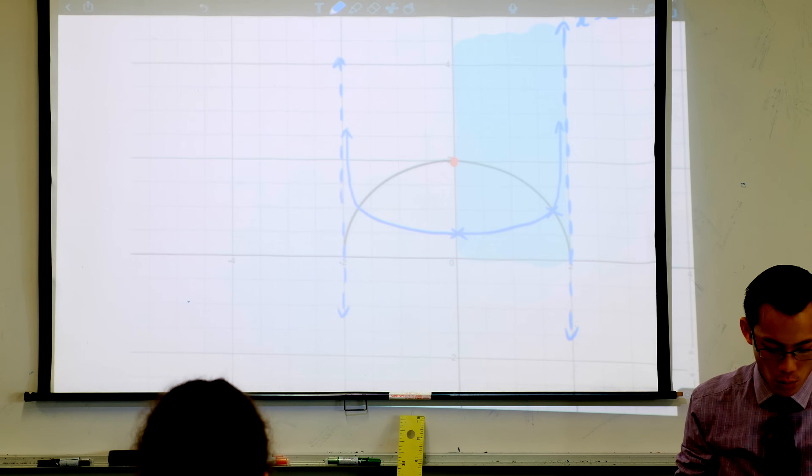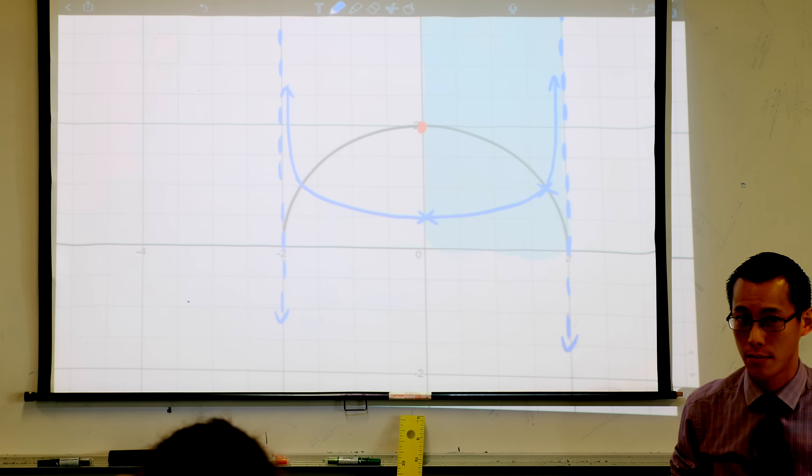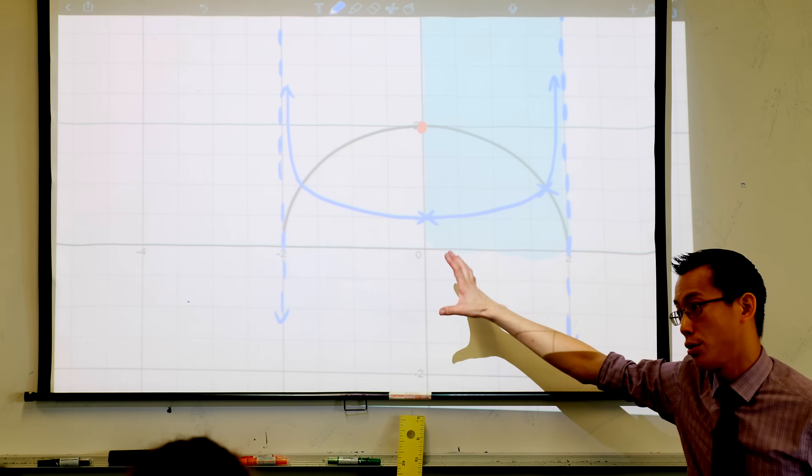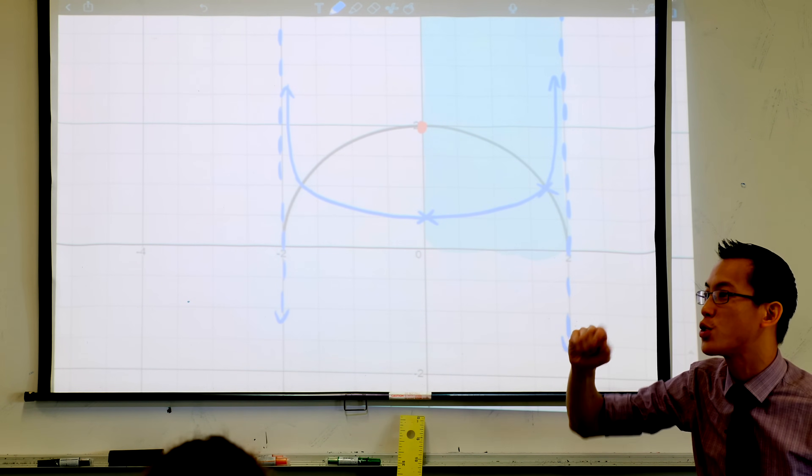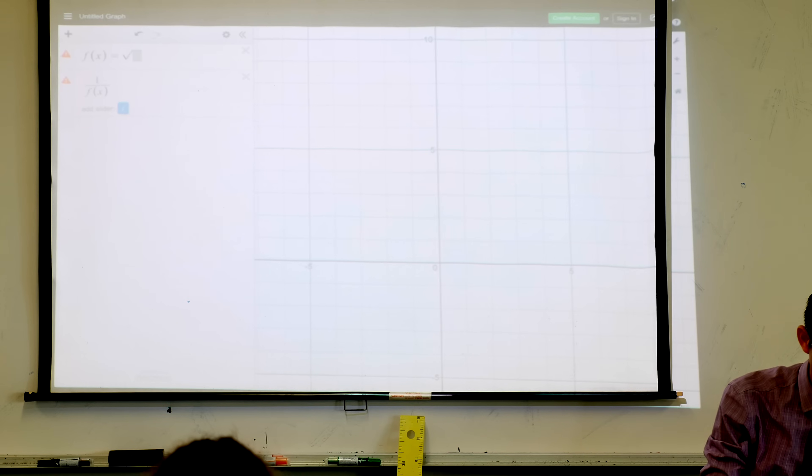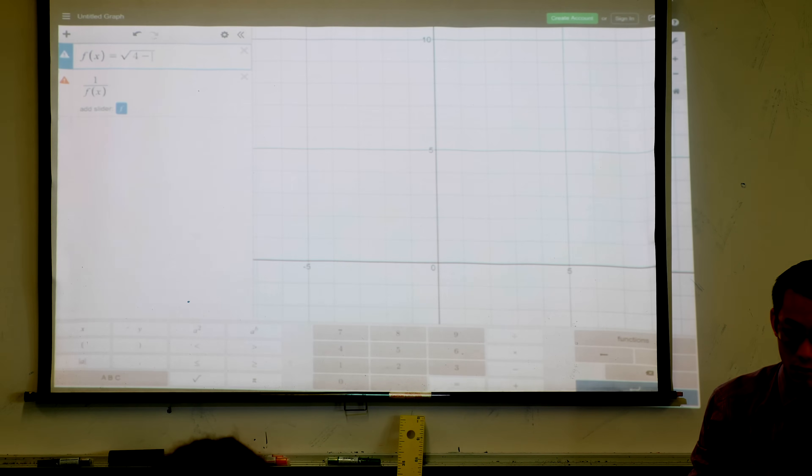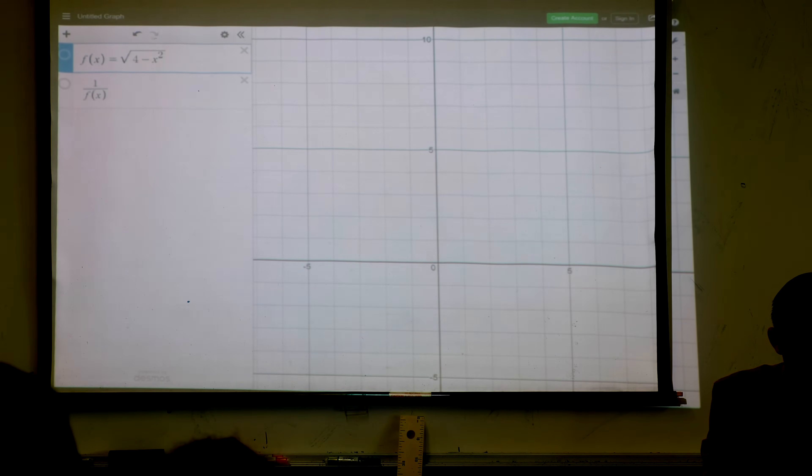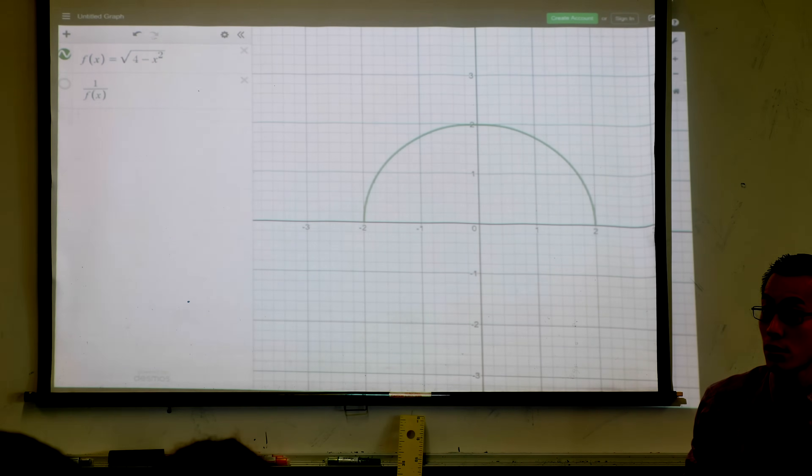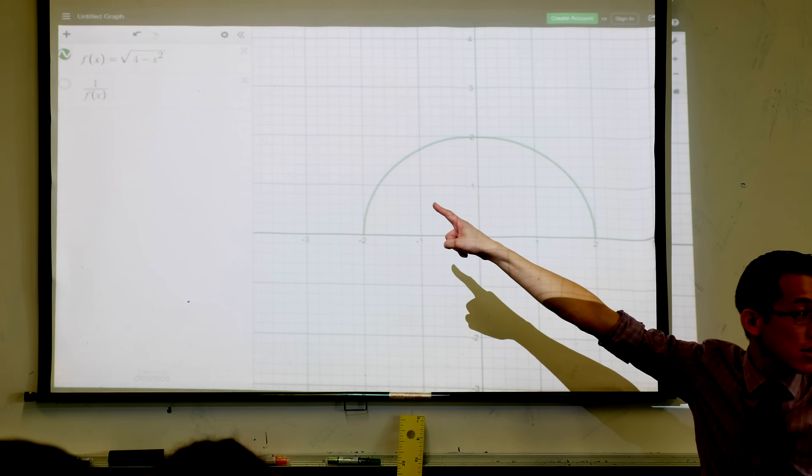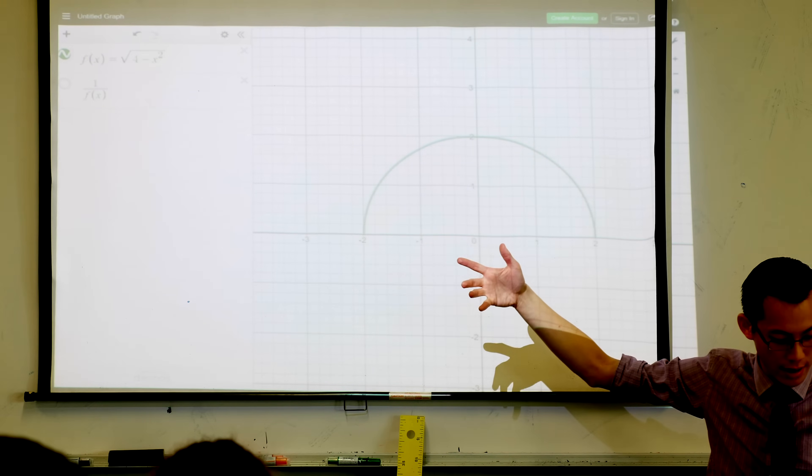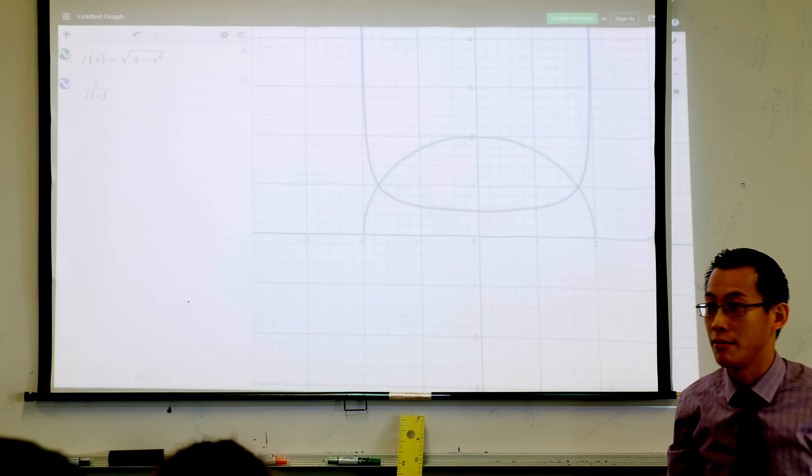Having a look at this guy, what's the radius of this? The radius is 2, so in my equation I'm going to have 2 squared, which is 4. And then I'm going to have minus what? x squared. There is my, whoops, there's my semicircle. And if you go and put into your Desmos, put 1 over f of x, right? Ready for it? Bam, there we go. Nailed it.